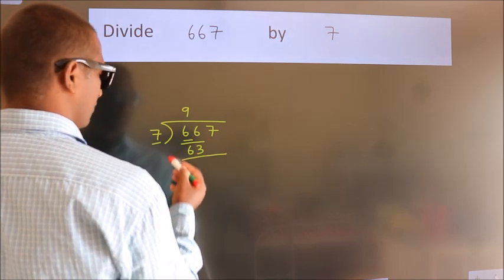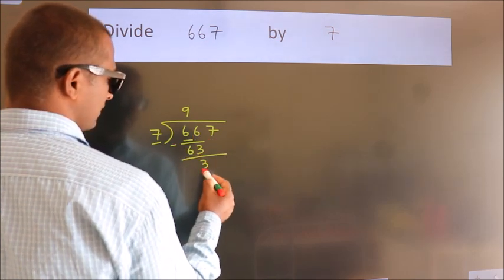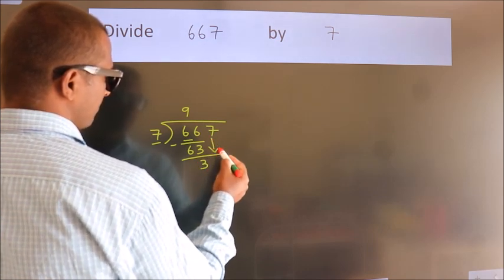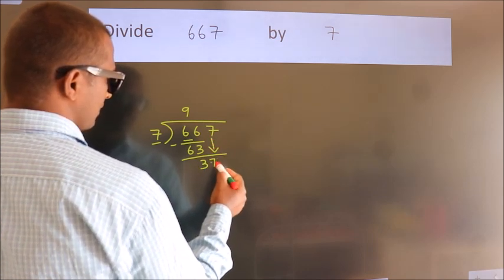Now we should subtract. We get 3. After this, bring down the next number, 7, to get 37.